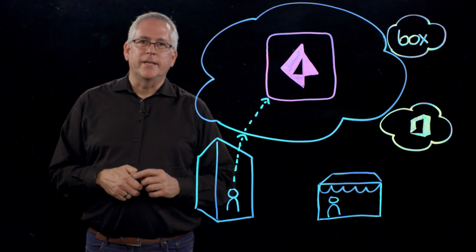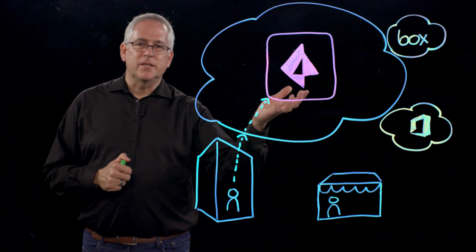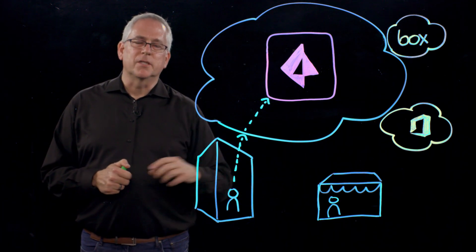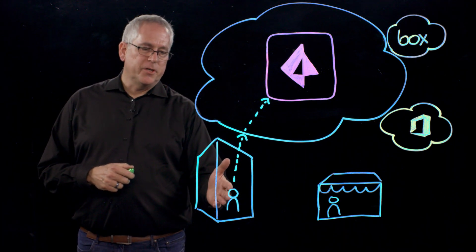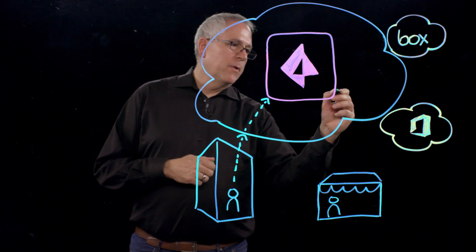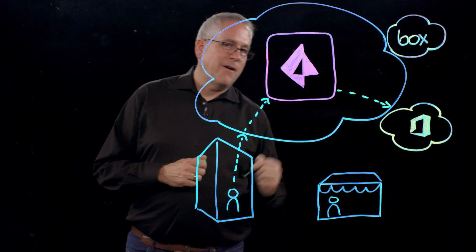They're both accessing compute. The compute might be in the same physical location depending on what's the best route and lowest latency. But when the user in Italy connects to the service, when we route them to, in this case Office 365,